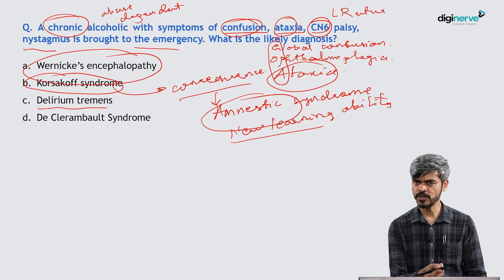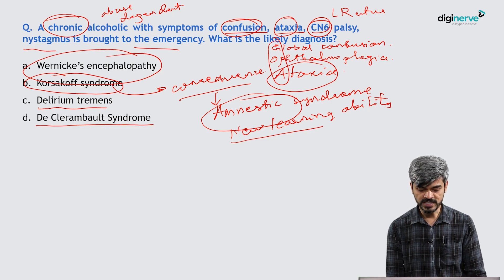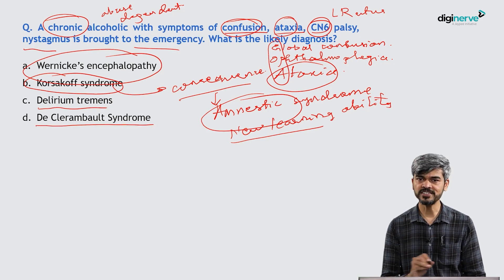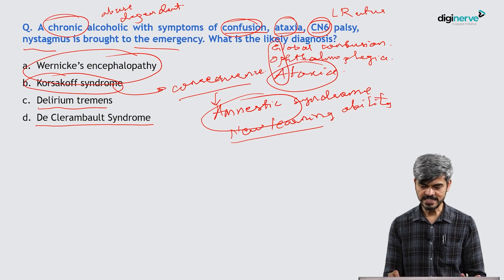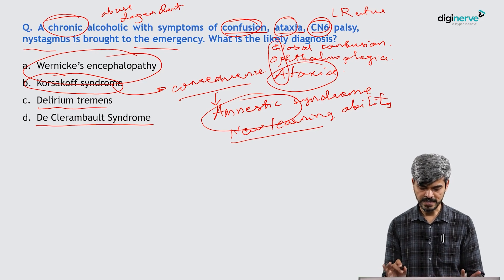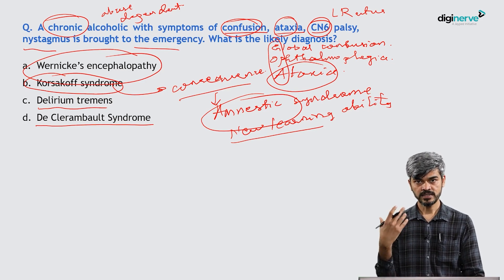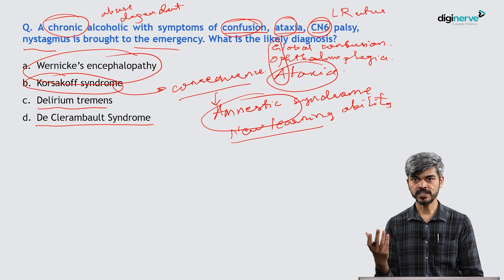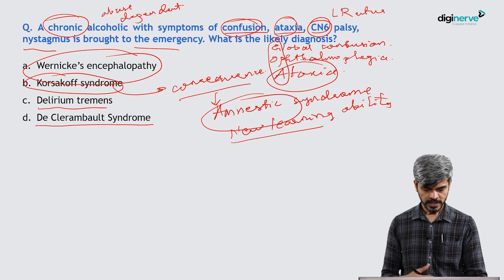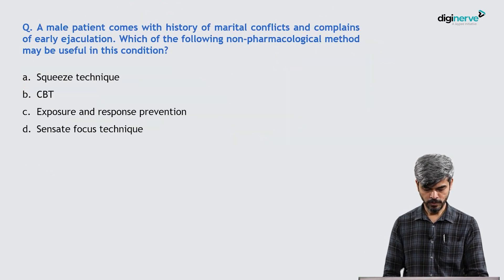Delirium tremens was discussed previously. De Clérambault syndrome involves delusions that your partner is cheating on you. The answer here is Wernicke's encephalopathy.